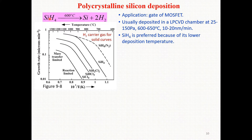For the polycrystalline silicon depositions, we have the reaction as you can see here: we have silicon tetrahydride (SiH4), and when heated up to 600 degrees centigrade, we get silicon along with hydrogen.